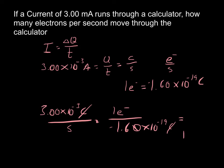And I get an answer of 1.88 times 10 to the 15th electrons per second. So 1.88 times 10 to the 15th electrons per second moving through that calculator.